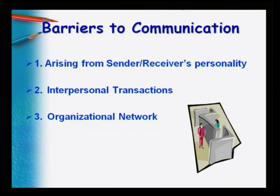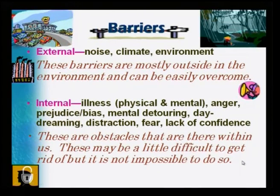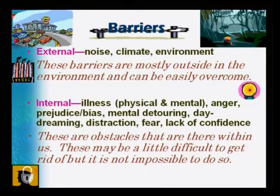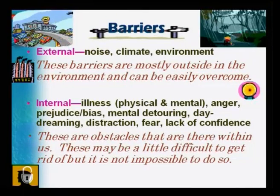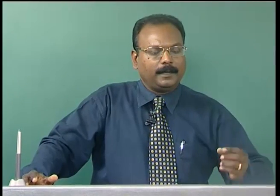These barriers happen at three categorical levels: the sender-receiver's personality, transactions between two or more people, and the organizational network. Barriers can be classified into two types — external and internal. External barriers are physical ones such as noise, climate, and environmental problems. For example, while making a phone call in an airport, a flight takes off and the continuous noise affects your hearing so you cannot hear what the other person is saying.